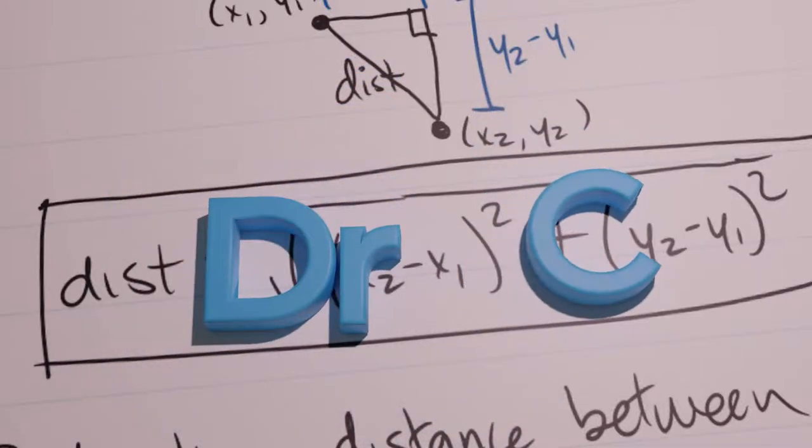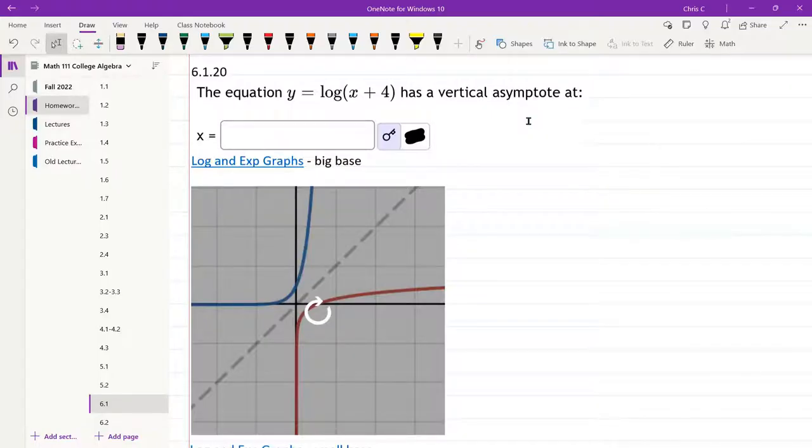In this question we have a log graph and we need to figure out where the vertical asymptote is. There is a shift right here. That plus 4 is a horizontal shift, and that will shift it. It looks like to the right, but remember horizontal shifts are always the opposite, it's going to be to the left.